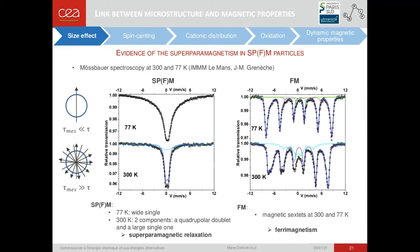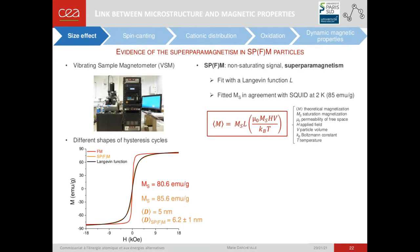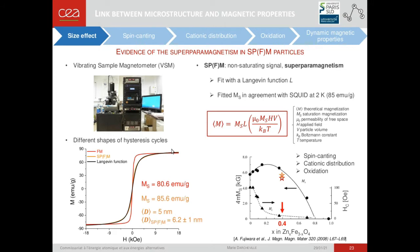I have verified these two different magnetic behaviours by vibrating sample magnetometer measurements. Different shapes of hysteresis cycles have been observed. In the case of SPFM particles, the signal does not saturate at high field values — the nanoparticles are thus superparamagnetic. The signal has been fitted with a Langevin function, and the recovered saturation magnetization is in total agreement with SQUID measurements. The obtained saturation magnetization for both systems is a bit lower compared to nanoparticles of the same composition in the literature for a dense layer. This gap could be explained by spin canting, cationic distribution, or oxidation.